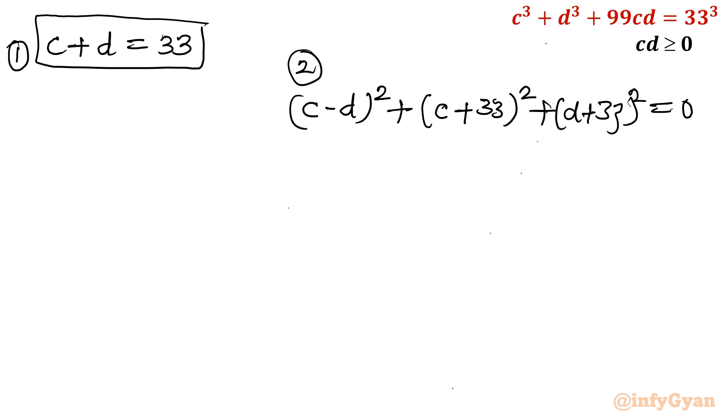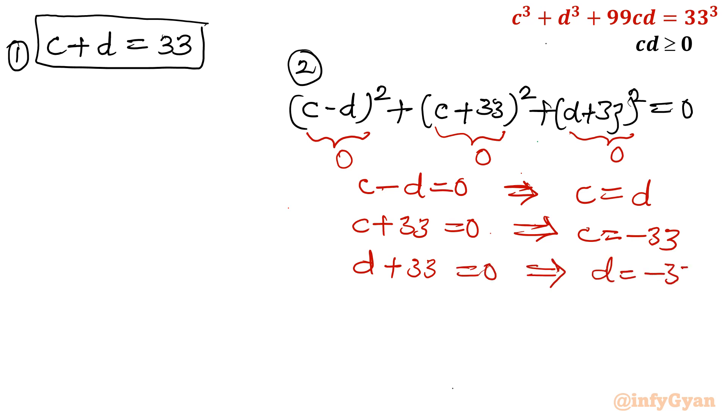Now you can conclude sum of three squares equal to 0. How it is possible? Individual bracket will be 0. Otherwise square won't be negative. So it won't cancel out. So let me conclude. If first bracket is 0, then C minus D equal to 0, conclusion is C equal to D. Second bracket, C plus 33 equal to 0, conclusion is C equal to minus 33. Third bracket equal to 0, conclusion is D is equal to negative 33. And either both C and D must be positive or both negative values are accepted. Then only the product will be positive. So both values are accepted.